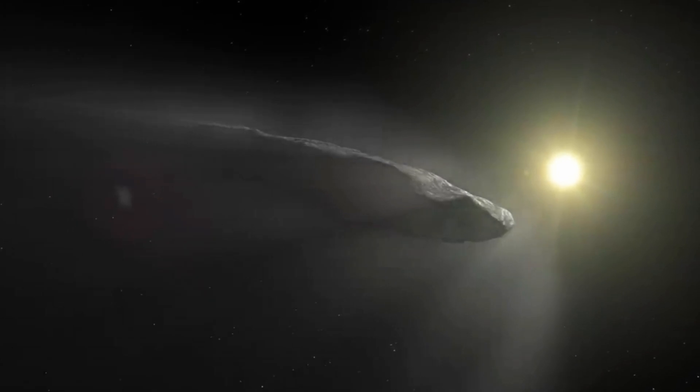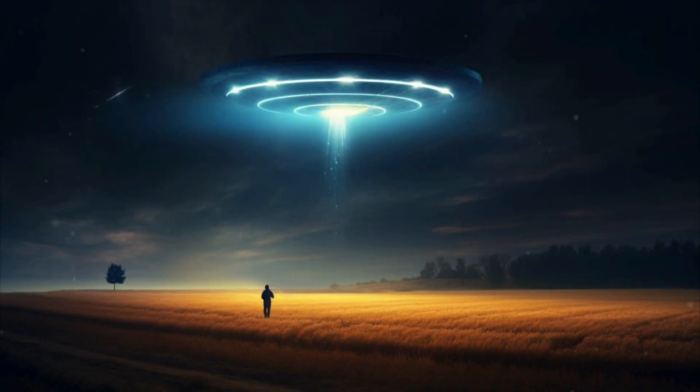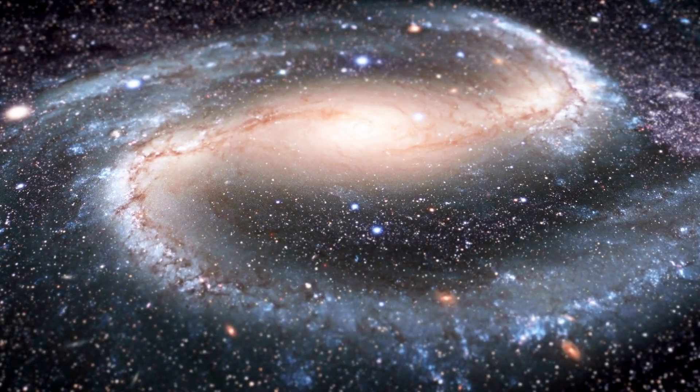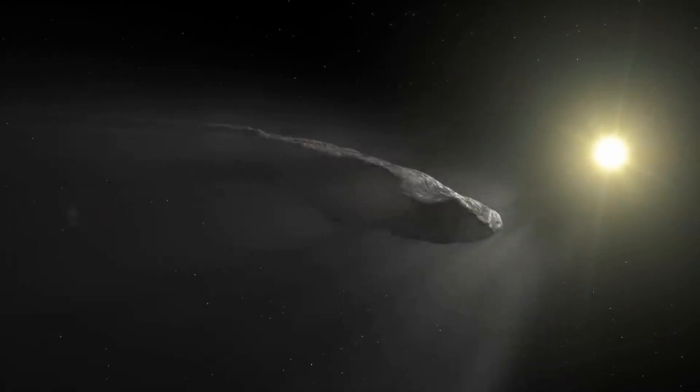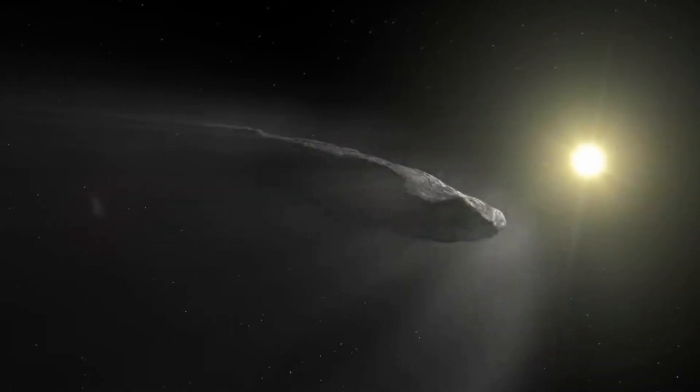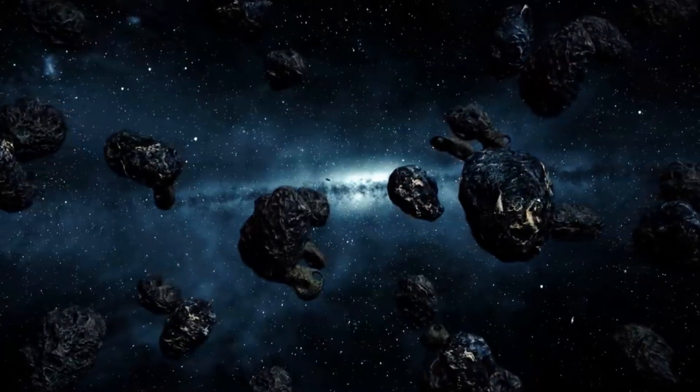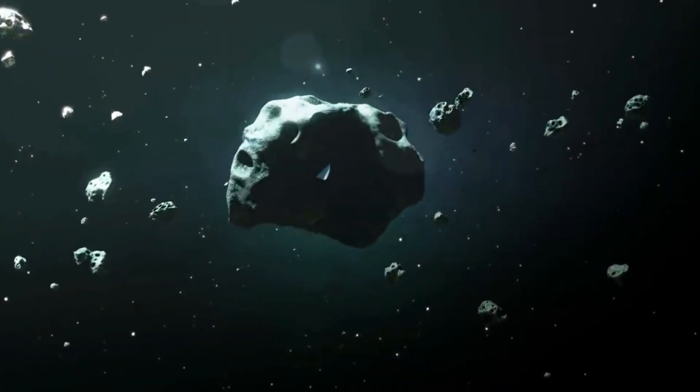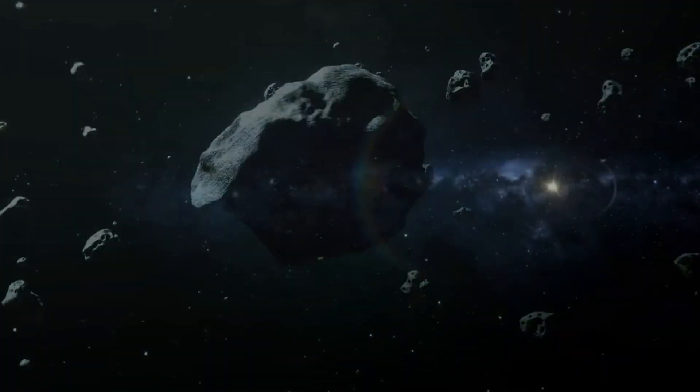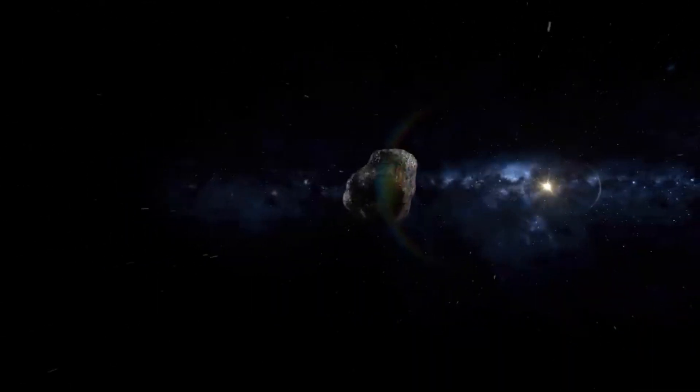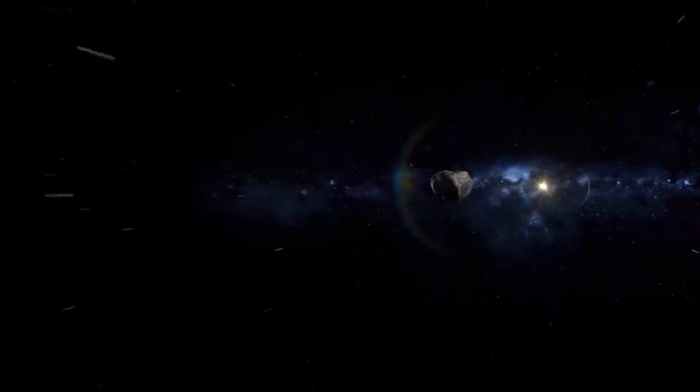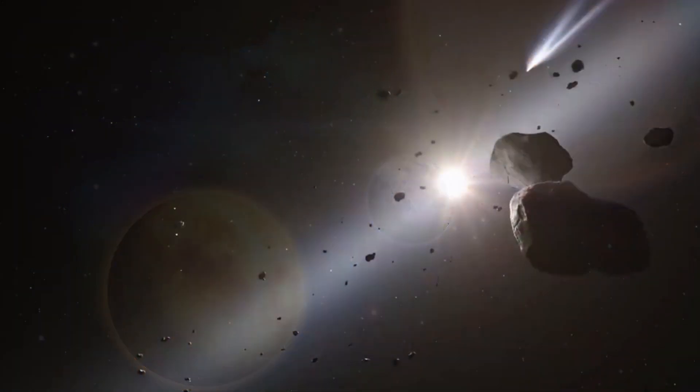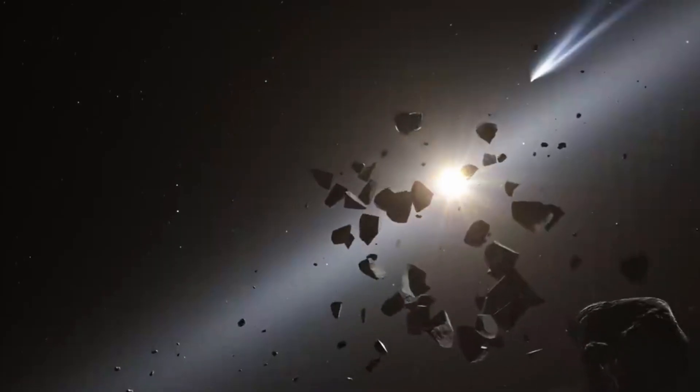Advanced civilizations might use objects like Oumuamua to transmit signals, explore other star systems, or even spread life throughout the galaxy. If this theory holds, Oumuamua could be the first clue of intelligent life beyond Earth. While current evidence points to natural origins, the possibility of a purposeful message continues to captivate our imaginations and drive further investigation. What if objects like Oumuamua are not random visitors, but intentional bridges between worlds? Whether natural or artificial, Oumuamua has left us with a cosmic mystery that challenges us to think bigger, question more, and explore farther.